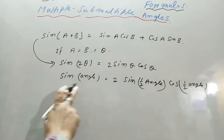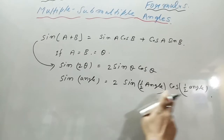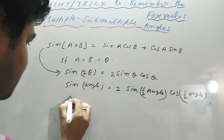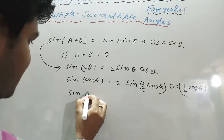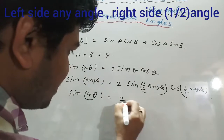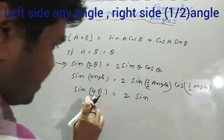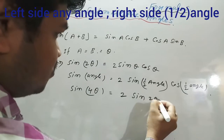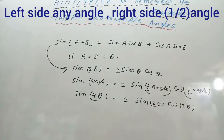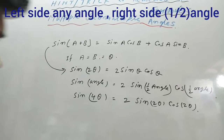Therefore, sin of any angle equals 2 sin(half angle) cos(half angle). That is, sin 4θ equals twice sin 2θ cos 2θ. This is a very important formula for multiple and submultiple angles.